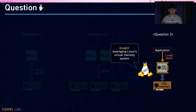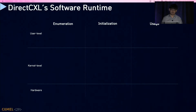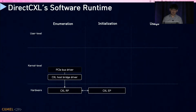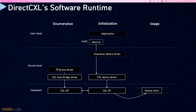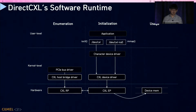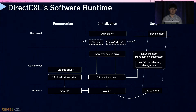To expose CXL-attached memory space to users, we leverage the Linux memory management system. The software runtime of Direct CXL consists of an enumeration phase, initialization phase, and usage phase. During Linux PCI bus driver enumeration, our CXL host bridge driver discovers CXL memory devices. Remote memory of each device is mapped into the system so the CPU can issue memory requests to it. Our CXL memory device driver exposes a character device to interact with user-level applications. Users can create a namespace through IOCTL and perform mmap on the namespace device to use CXL-attached memory. The mmap handler maps the physical address space of remote memory into the user's virtual address space, so the user can issue load/store instructions to use CXL-attached remote memory.